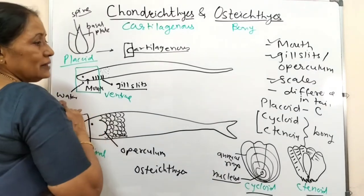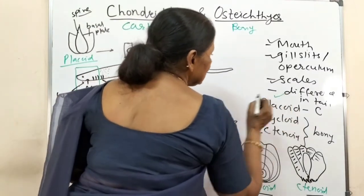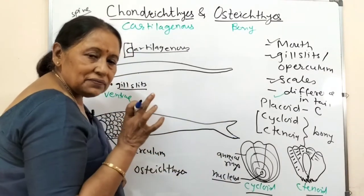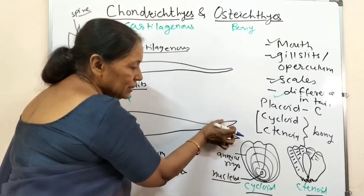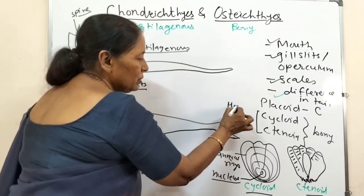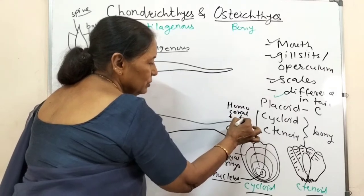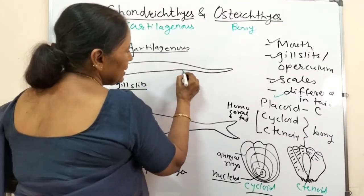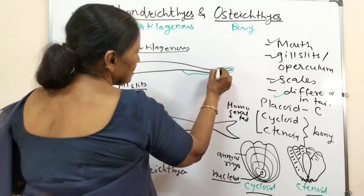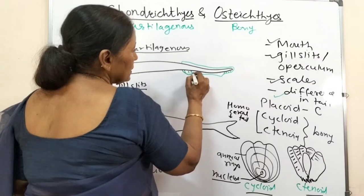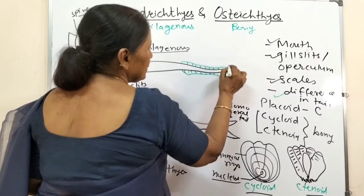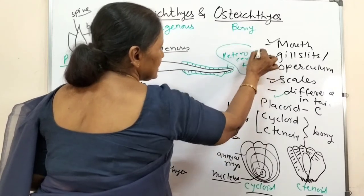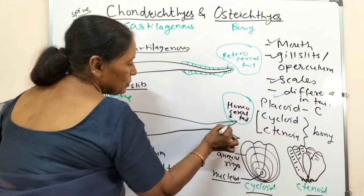Now come to the difference in tail. In bony fishes, both lobes of the caudal fin are symmetrical - equal in size - and this is called a homocercal tail. Whereas in Chondrichthyes, the two parts are not similar, and this is called a heterocercal tail. So cartilaginous fishes have a heterocercal tail whereas bony fishes have a homocercal tail.